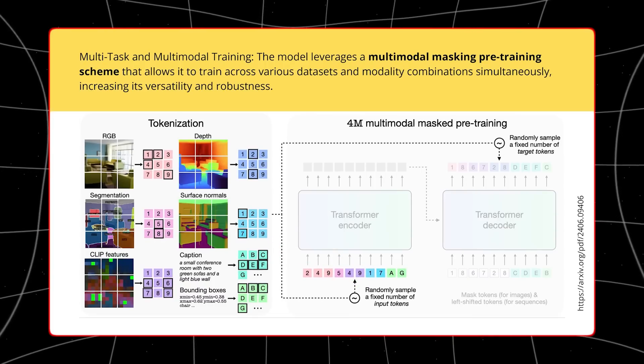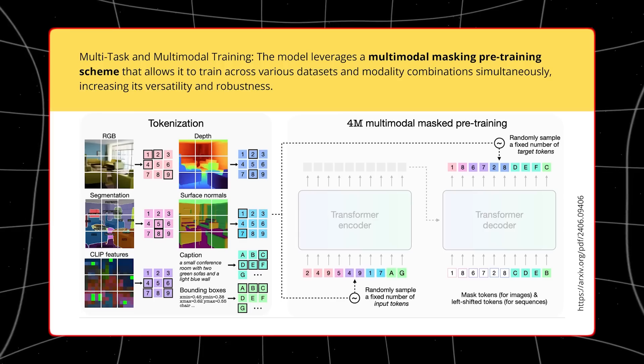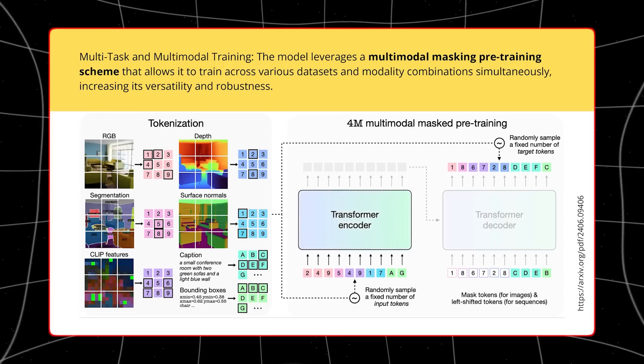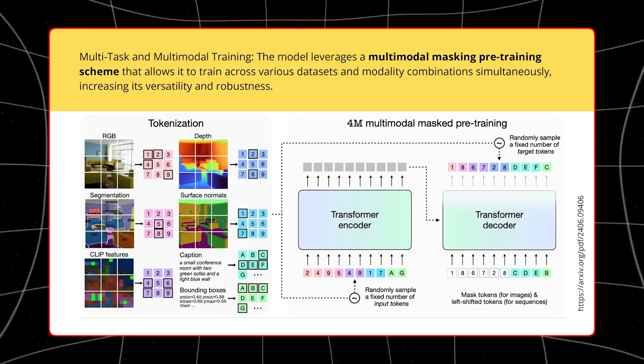In addition to image generation, the Apple 4M AI model excels in complex object detection. This involves identifying and categorizing objects within images or videos, which can be applied to a wide range of scenarios.